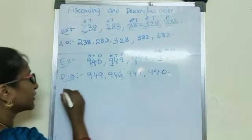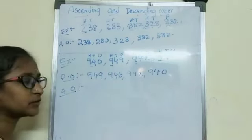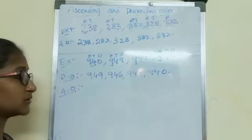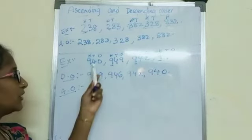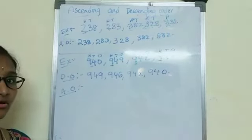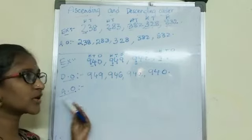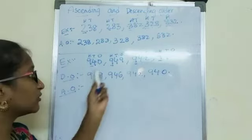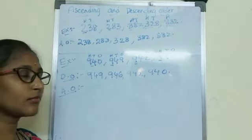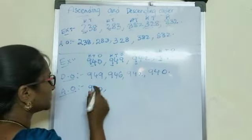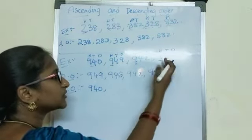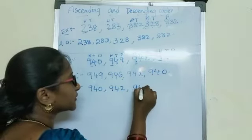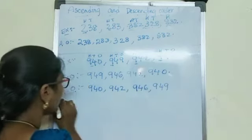I am going to arrange this same set of numbers into ascending order also. I have to compare with their hundreds place — already we know all hundreds places are equal. Then I have to check the tens place — all the tens places are also same. Then I have to go to ones place. Ascending order means small — I have to find the smallest. Ones place values are 0, 9, 2, 6. The smallest is 0, so first is 940. Next, from 9, 2, 6 the smallest is 2 — so 942. After 2 what we have? 946. And last, 949 is the biggest.